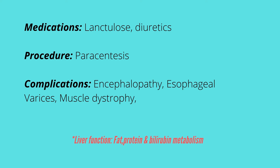Procedures that can be performed include paracentesis, which is the removal of fluid from the abdomen — since patients with liver damage normally have ascites. Prior to the procedure the patient empties their bladder, and is placed in a supine position with the head elevated. We assess the extracted fluid by checking its color and amount, then re-measure the abdominal girth after the procedure. Long-term treatment may include a liver transplant.